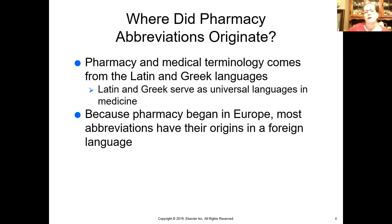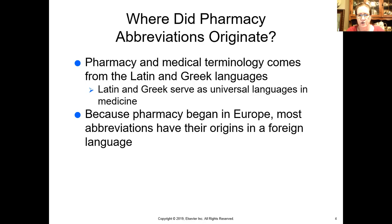Where did pharmacy abbreviations originate? Pharmacy and medical terms all come from Latin and Greek languages, which were the universal languages in medicine — just like French is the universal language for the Olympics. This is a huge tradition in medicine. Because pharmacy in America began with European traditions, most abbreviations have their origins in a foreign language.